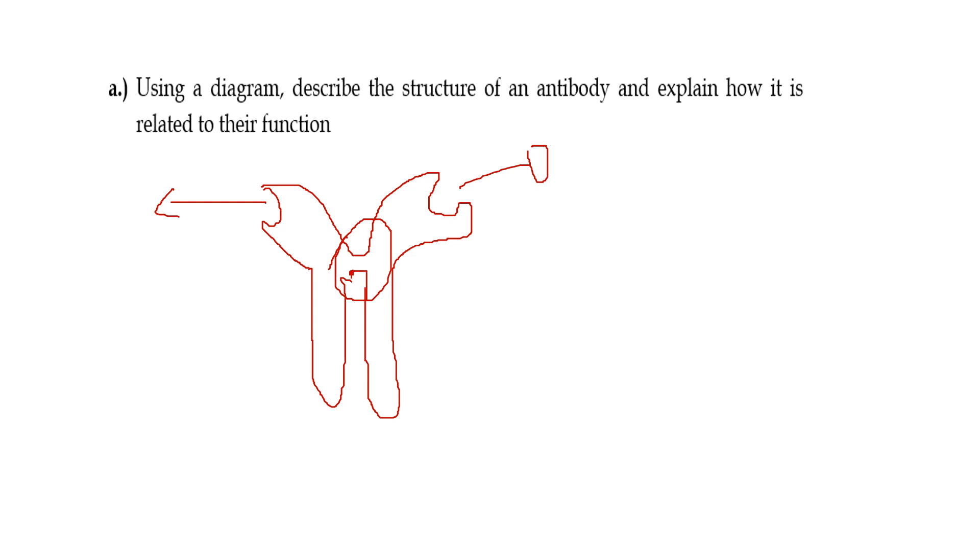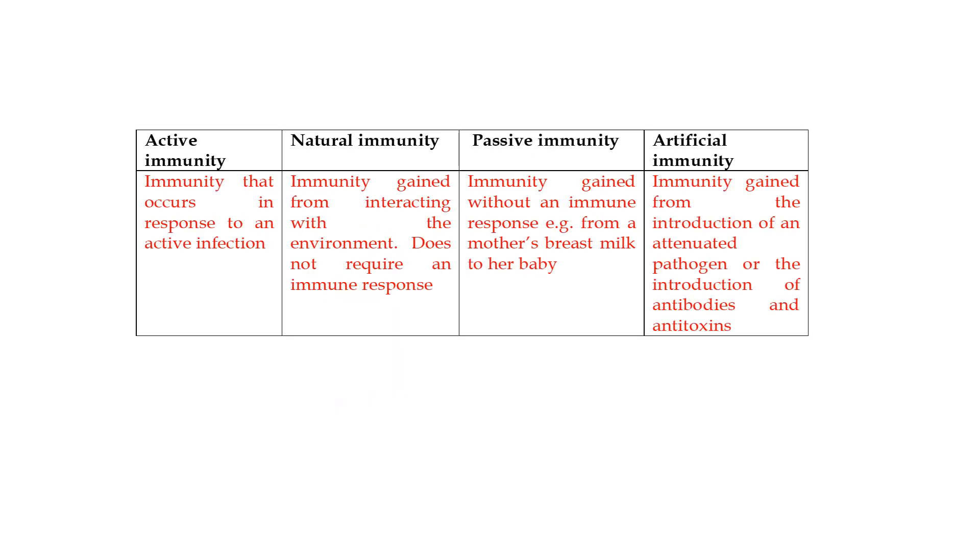In terms of structure, take note of the binding site, the globular structure, the fact that all the hydrophobic amino acids are on the inside, and the hinge region. You also need to take note that the binding sites are referred to as variable regions. That's because each binding site is different for each antibody. There are different antibodies for different pathogens, so the binding site is what's different and the rest of the antibody stays the same.